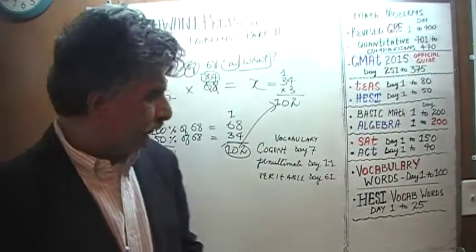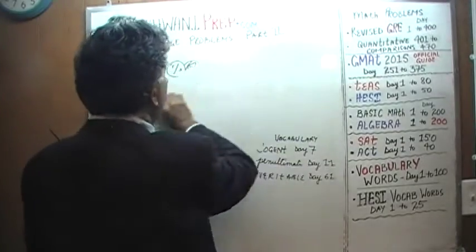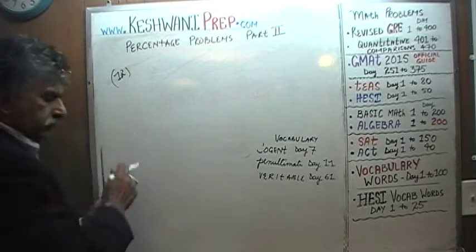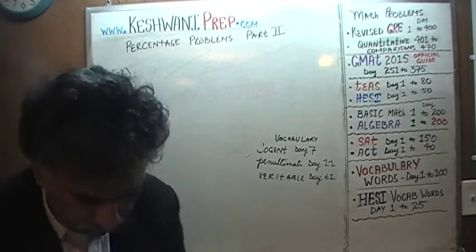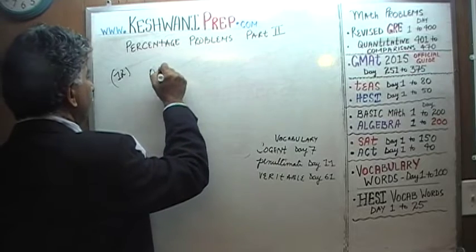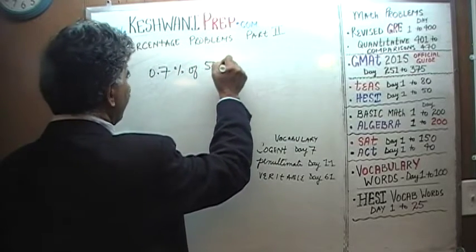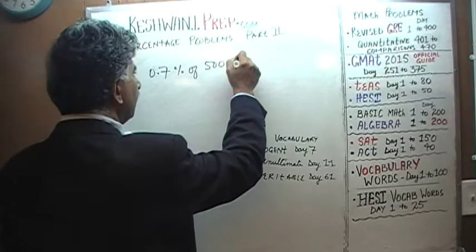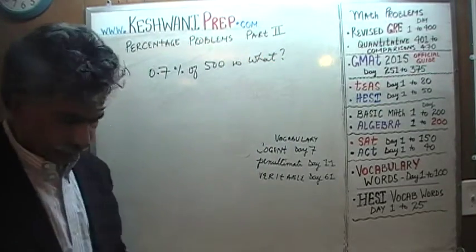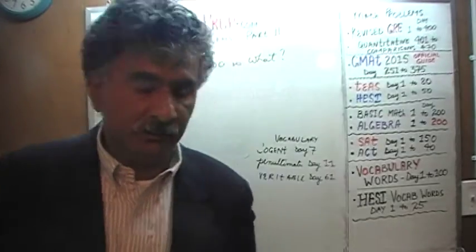Number 12: 0.7% of 500 is what? Again, we'll do it both methods. Let's first do the academic method by setting it up in an equation.